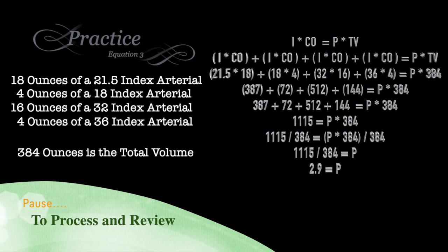We're adding that to our third chemical, which is 32 index arterial, multiplied by 16 ounces. And we're adding that to our fourth chemical, 36 index arterial, which we used 4 ounces of. And then we keep writing it out as P times the total volume, which was 384 ounces, or 3 gallons.